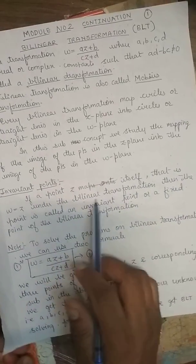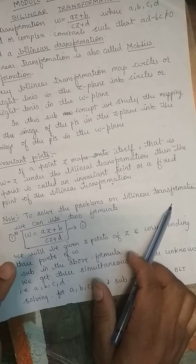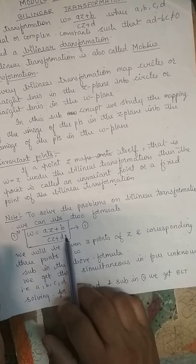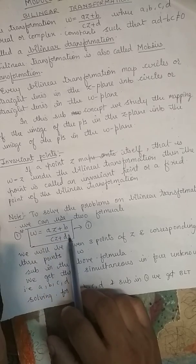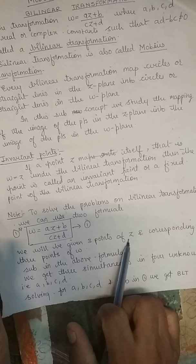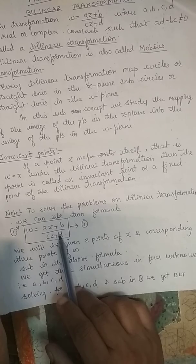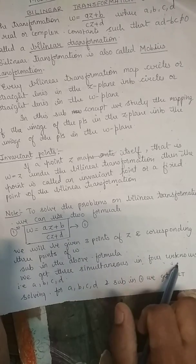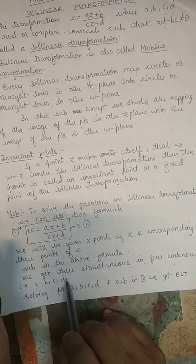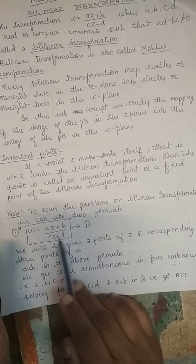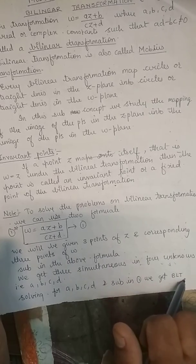There are a number of procedures mentioned in the textbook for solving problems on bilinear transformation. One uses W equals AZ plus B upon CZ plus D and solves for A, B, C, D. Given three points of Z and three corresponding points of W, substituting gives three simultaneous equations in four unknowns A, B, C, D. Solving and substituting back yields the required bilinear transformation.